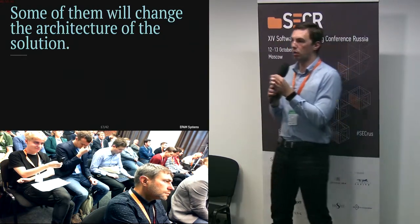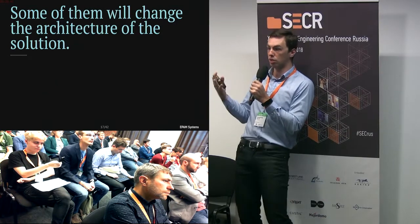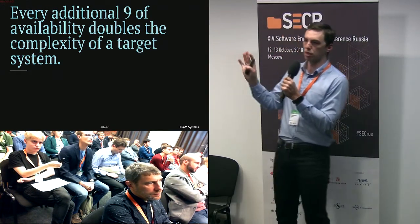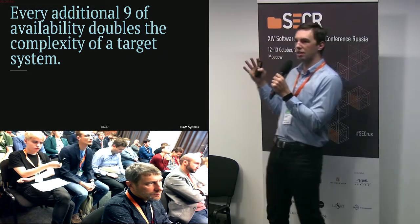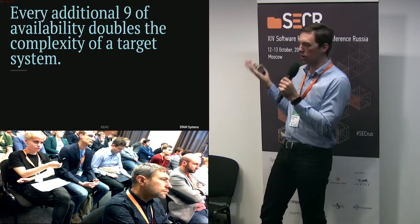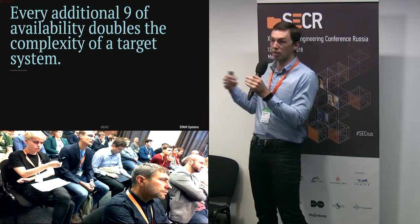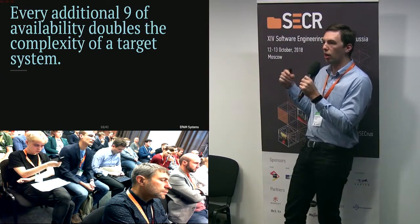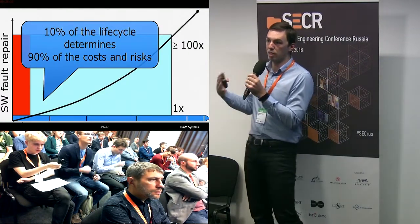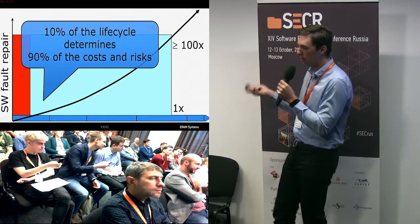Why are those requirements so important? Because some of them will change the architecture — and the cost — dramatically. For example, availability is usually expressed in nines: 99.9, 99.95, or 99.99999. Google Cloud DNS is the only service I know that provides 100% availability. Every additional nine of availability doubles the complexity and cost of the system. You need to know those numbers precisely before starting the project, because the earlier you catch requirements, the cheaper it is to fix problems.